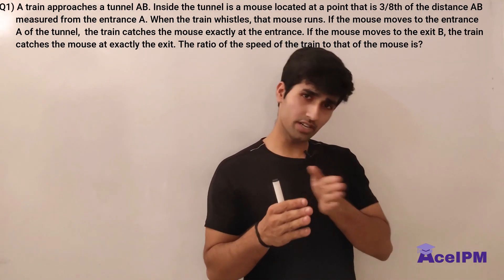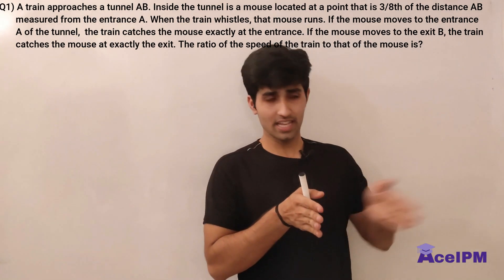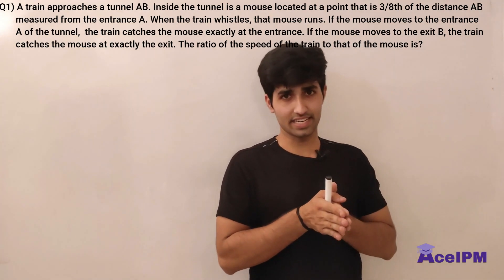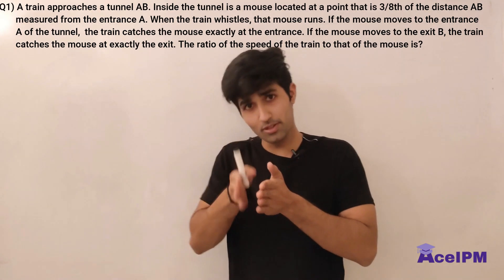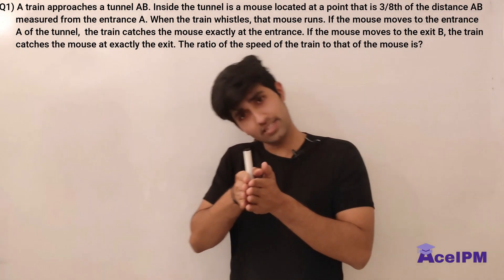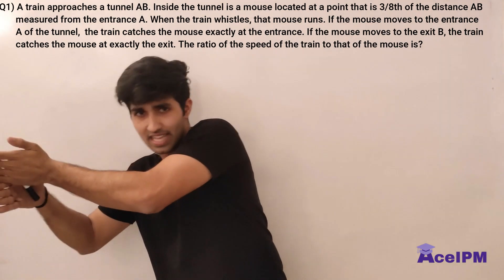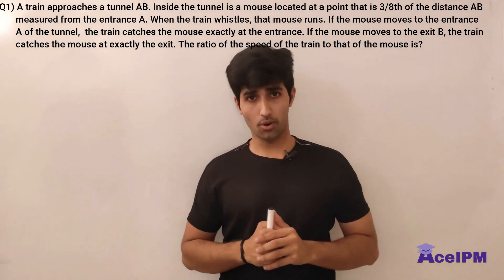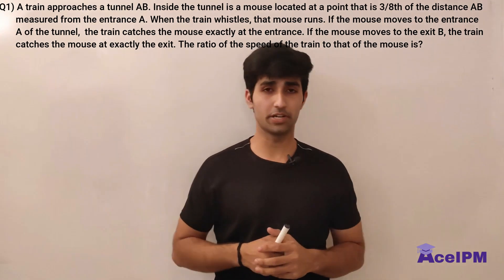If the mouse runs towards the entrance, the train and the mouse meet exactly at the entrance. If the mouse runs towards the exit from the point at 3/8 distance, the train and the mouse meet exactly at the exit. Find the ratio of the speed of the train to the speed of the mouse.